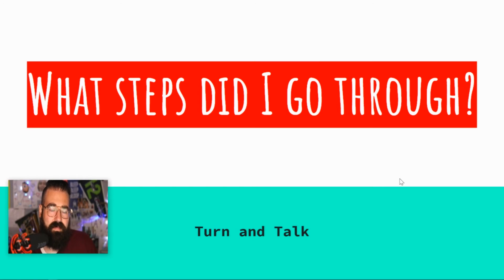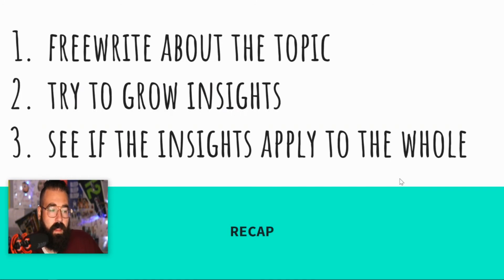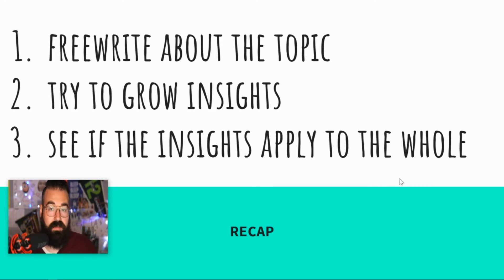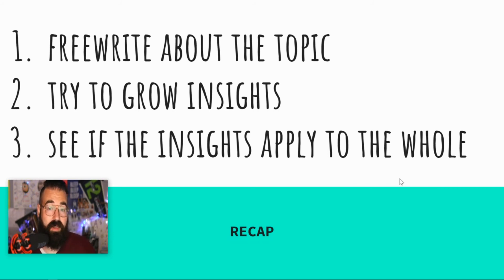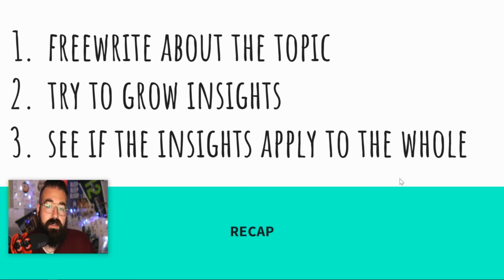So what steps did I take to come to that conclusion? There are three steps that are important, and in some ways there's a step zero. Step zero is to focus on a topic — we've already chosen teen activism, and then we focus even more on one activist. Then step one is to free-write about one of them, which was when I realized she's super professional. Step two, I grew that insight — I realized maybe it's because her parents have been helping her. Step three, I asked: is this true for all activists? I checked if the insight could be applied to the whole. That's how you're going to start to develop these subtopics, or key parts, of your teen activism subject.